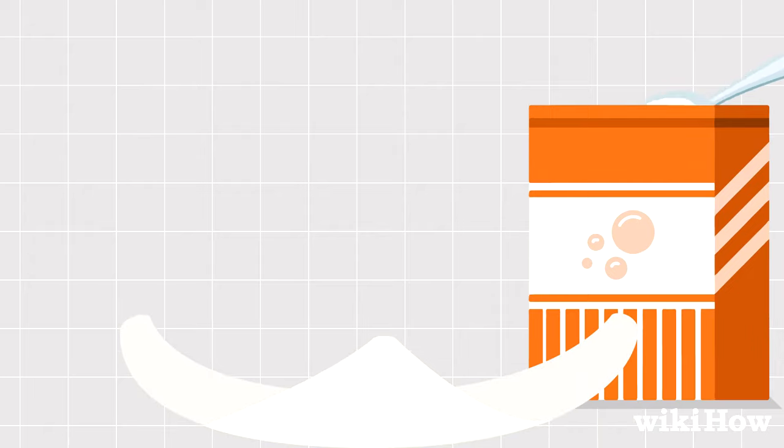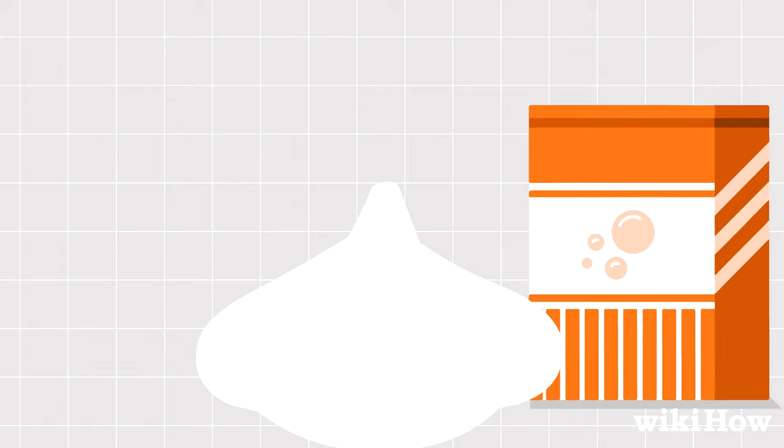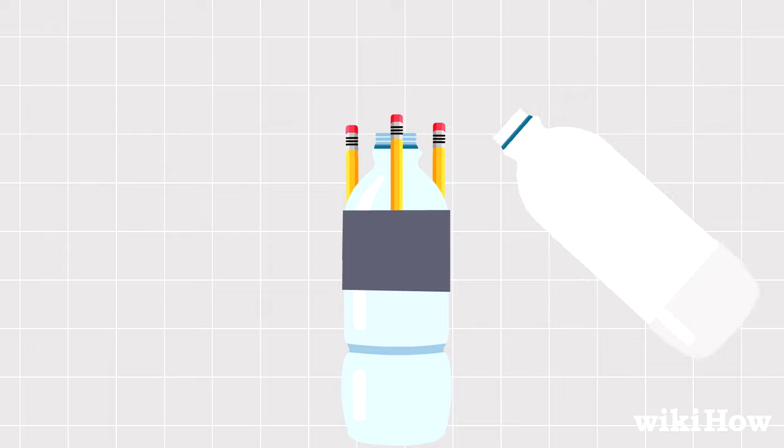Then place one scoop of baking soda in the middle of the paper towel and roll the paper towel up over it. Twist the ends to keep it secure. Next, pour the vinegar into the bottle until it's halfway full.